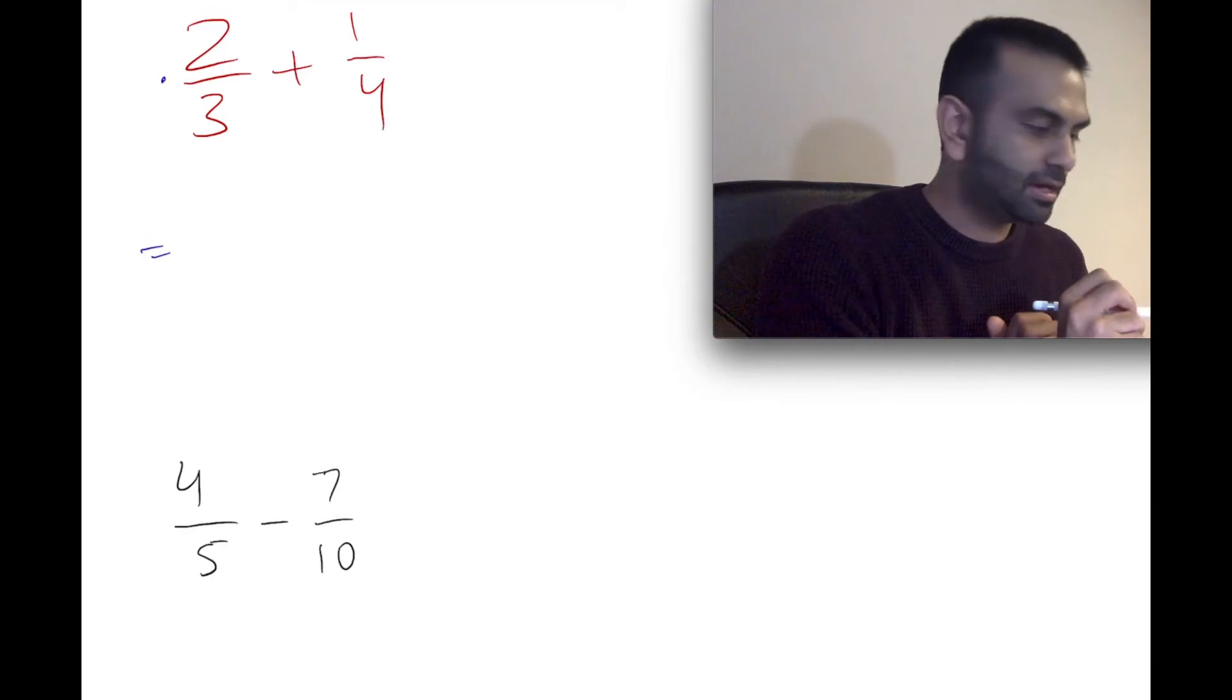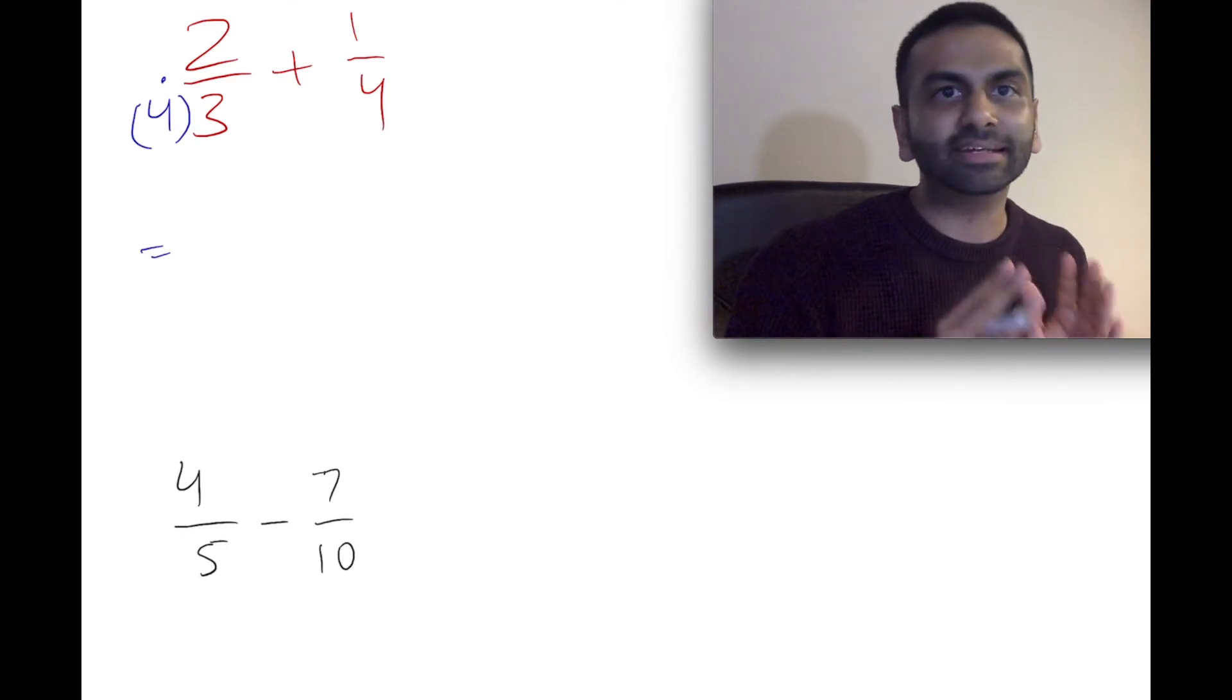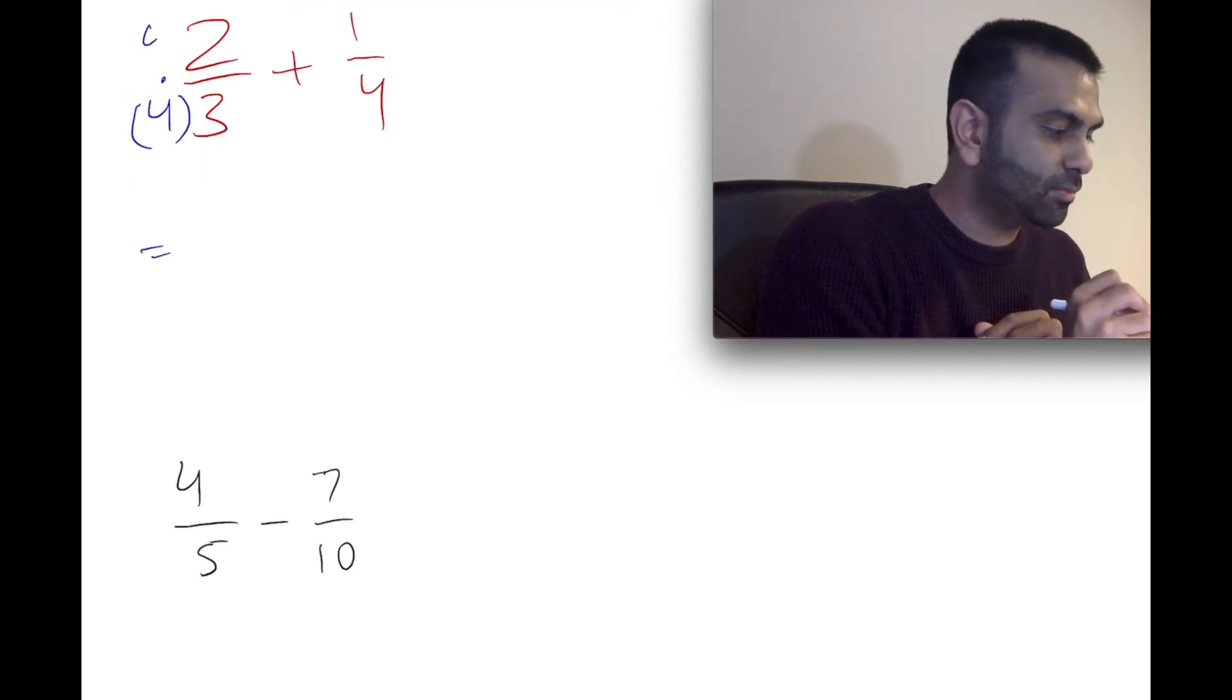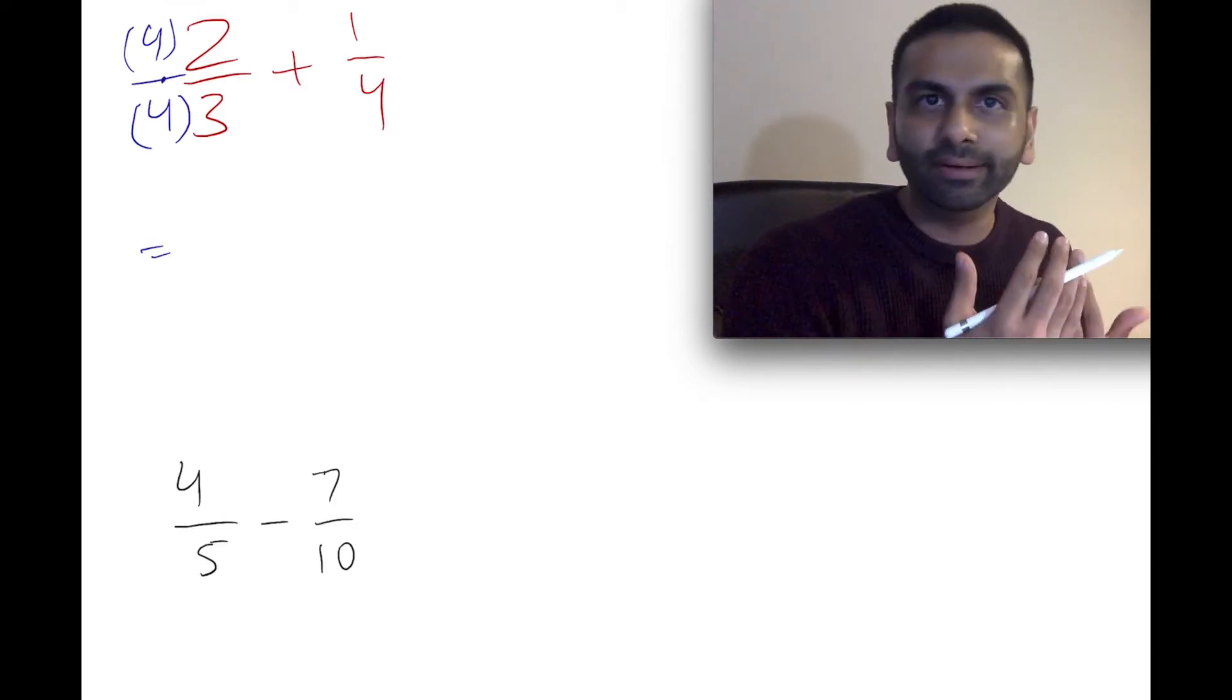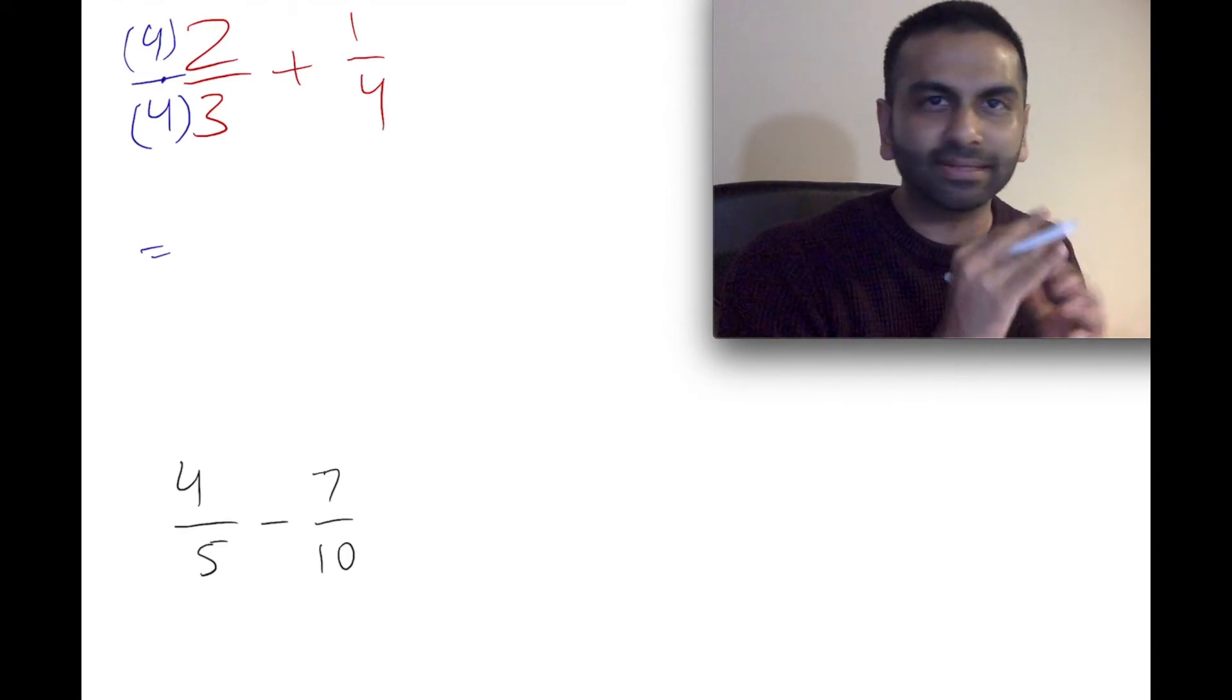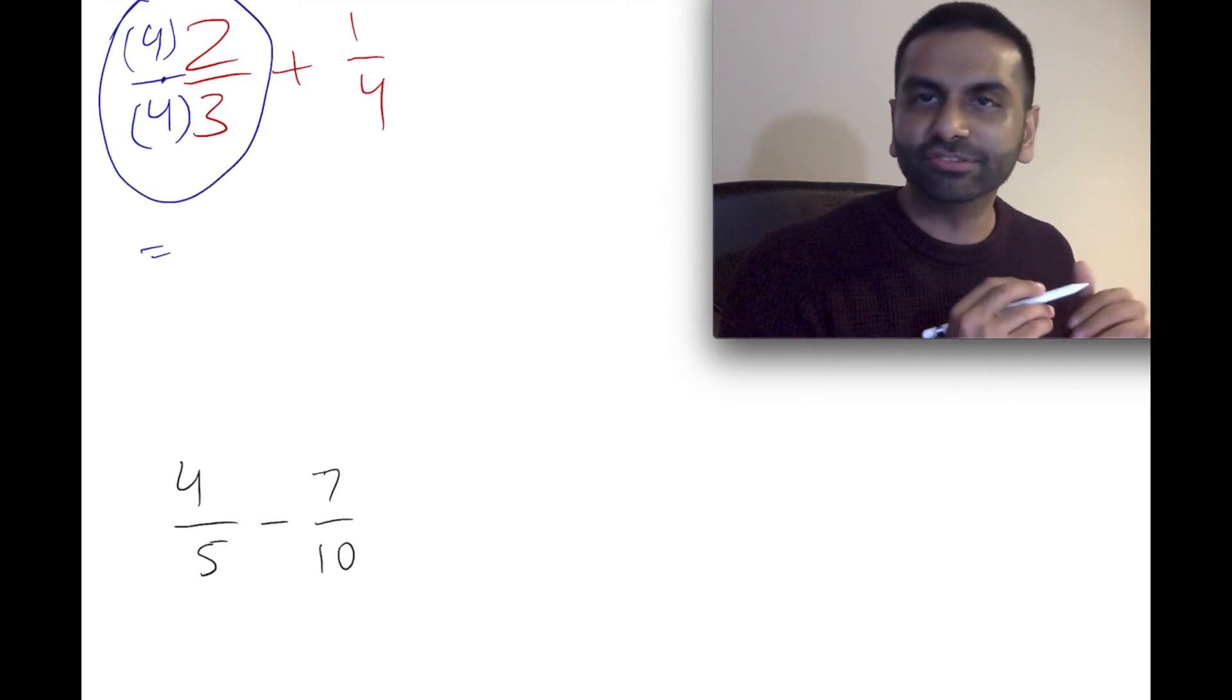Well, if we multiply this by four on the bottom, then that three will become a 12. But here's the thing, it's illegal to just go around and multiply the denominator of random fractions by four. But it's legal if you also multiply the numerator by four. Because that's the same thing as multiplying the top and the bottom by four. That's like you're multiplying by one. And if you're multiplying by one, you're really not changing the value.